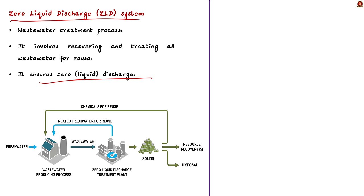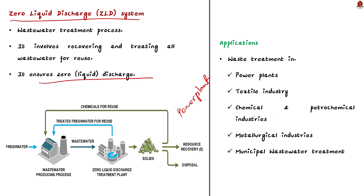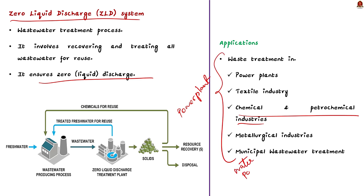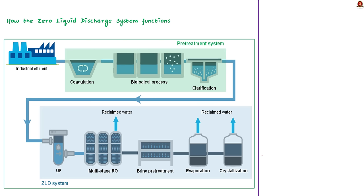This system can be used to reduce liquid effluent discharge from various industries. For example, the system can be easily integrated into power plants, textile industry, chemical and petrochemical industries, and metallurgical industries. All these industries are highly water-polluting, so use of the ZLD system with these industries will bring down water pollution.